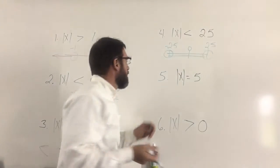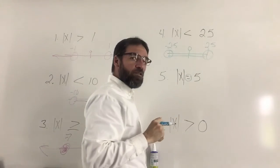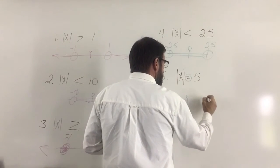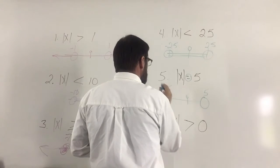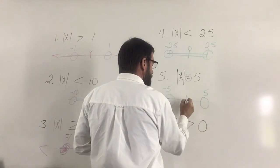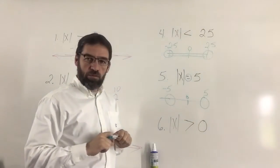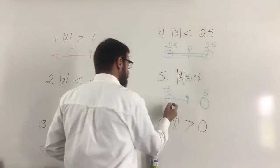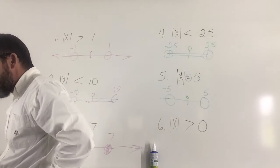Number five — watch out, this is a little twist: we have an equal sign, not an inequality. I'll draw zero and place five on the positive side and negative five on the other side. I draw a circle at each five. Should it be closed or open? And which way should the arrow go? Since it's equal there'll be no arrow. Check the book on whether to close it or leave it open.